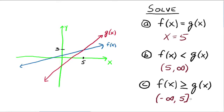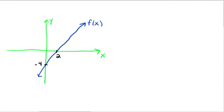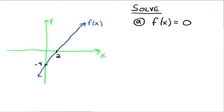Now let's talk about the x-intercept method. With this method, you're really only working with one graph — just the blue graph of f. We want to solve f(x) = 0, which is asking us to find all x values that make the y values equal to 0. Those are your x-intercepts — where the graph crosses the x-axis. In this case, x equals 2 is the solution, because when x is 2, the y value is 0.